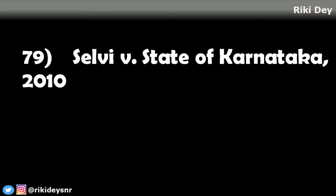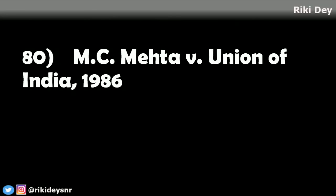Selvi versus State of Karnataka: the court declared that three prominent police interrogation techniques — narco analysis, the lie detector test and brain mapping — violated an accused person's right against self-incrimination under Article 20(3) and the right to life and personal liberty under Article 21 of the Constitution. A forcible administration of the above tests would be an unjustified intrusion into mental privacy and could lead to further stigma for the victim.